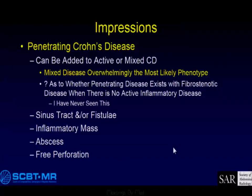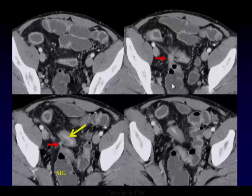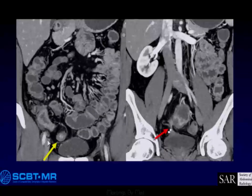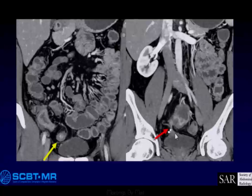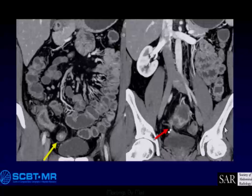Penetrating disease can be added to active or mixed disease, or to stenosis or stricture with active inflammation. You're looking for sinus tracts or fistulae, inflammatory mass, abscess, or free perforation — which fortunately we don't see very often; those patients go straight to the OR. Here's an example: we've got an area of small bowel disease with active inflammation and stricture formation, a fistula to the sigmoid colon, and in the coronal view a fistula going down to the dome of the urinary bladder. The bladder is tented, tethered, with wall thickening. When they resect this, they'll do an en-bloc resection including a portion of the dome of the bladder.